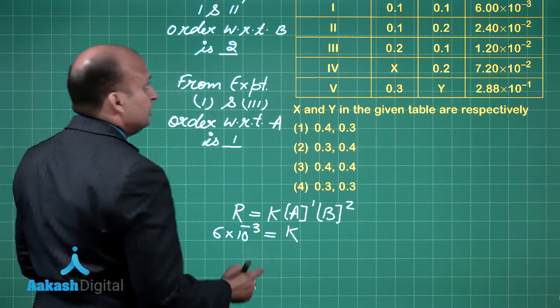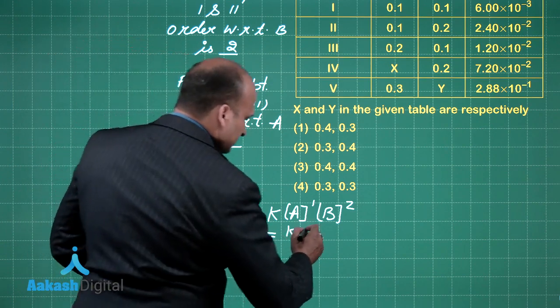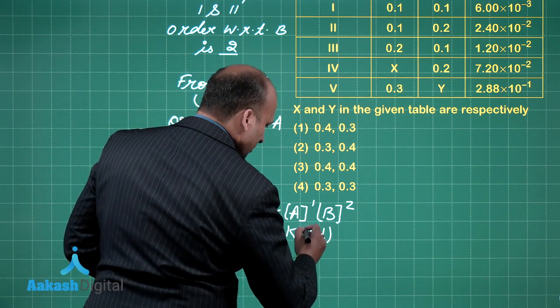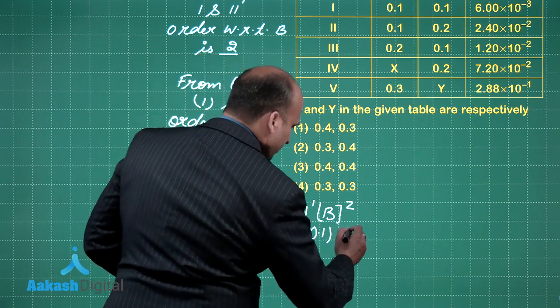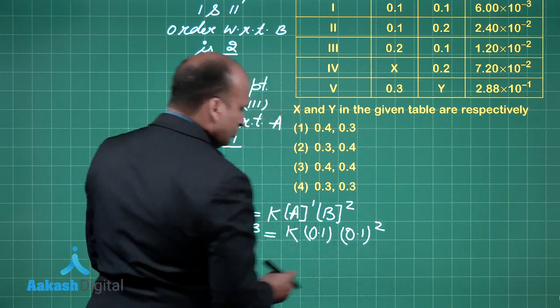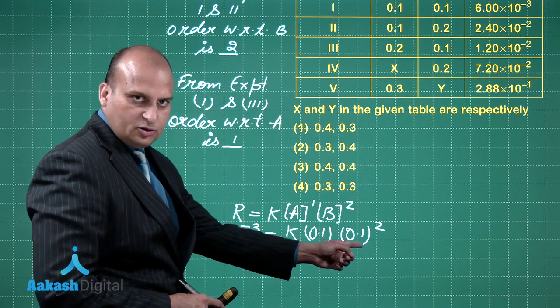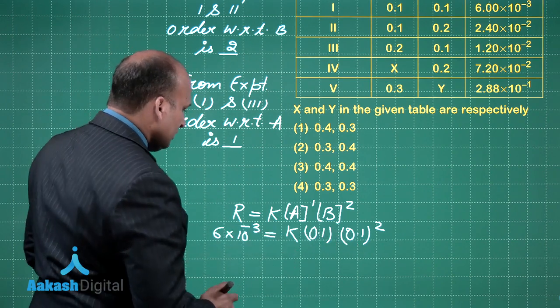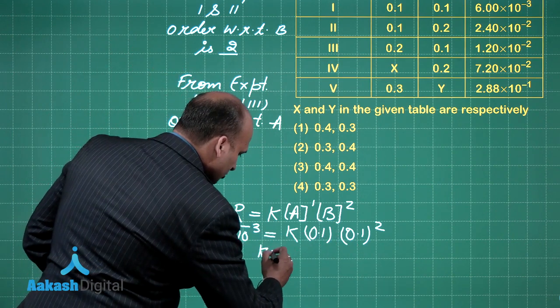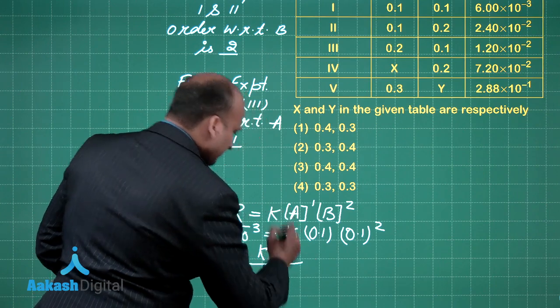What is the value of A? This is 0.1. What is the value of B? 0.1, but it is squared. This will give you 0.001, that is 10 raised to power minus 3. Hence, the value of K will come out to be 6.